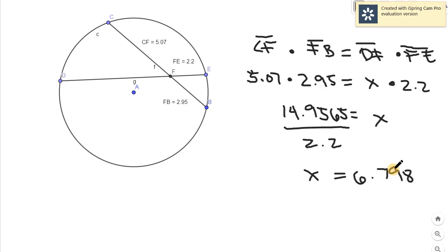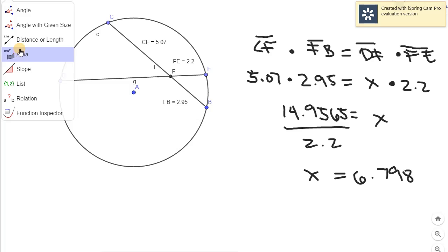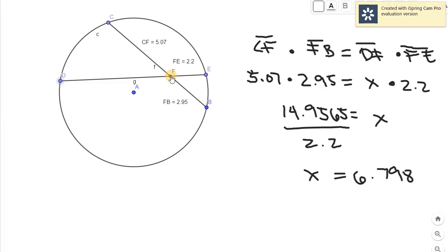This is useful for finding the unknown value. Are we sure that this DF is 6.798? Let's check the value. Let's measure the distance of DF, it's 6.8. If we try to round this off, it's 6.8. Therefore, again, the theorem stands and this is one use of the theorem. If you don't know one part, then you can get the measure of that part by just simply using algebra.